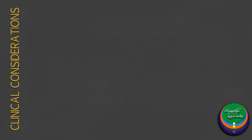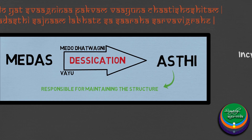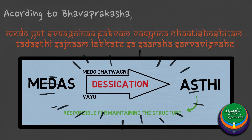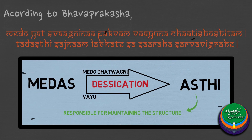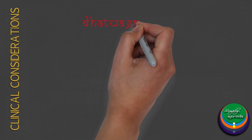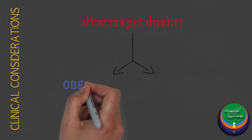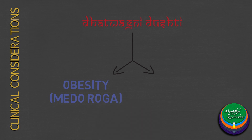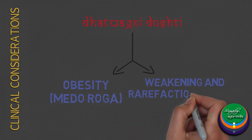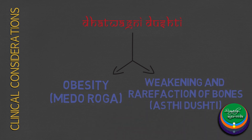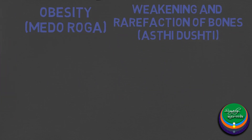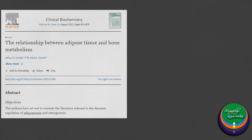We mentioned previously that Medo Dhatu Agni is responsible for the transformation of Medo Dhatu into Asthi Dhatu. The pathological aspect of this can be seen clinically, where due to weak Dhatu Agni obesity develops. This also leads to weakening and rarefaction of bones, leading to osteoporosis.